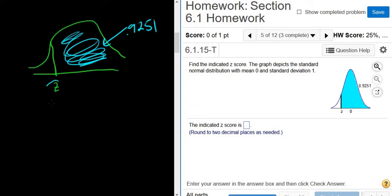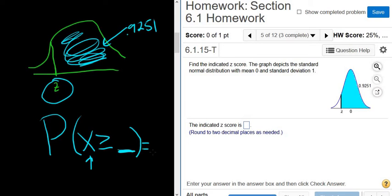So the question is to find the value of z. Since this is shaded to the right, we're going to pick greater than or equal to. You can use z or x, it doesn't really matter. Then we have to figure out what goes here, and we know the area is equal to 0.9251.